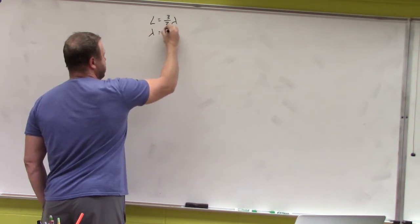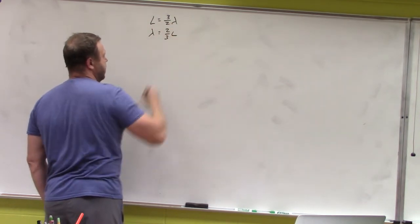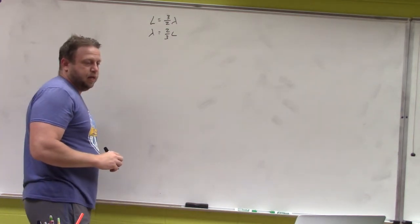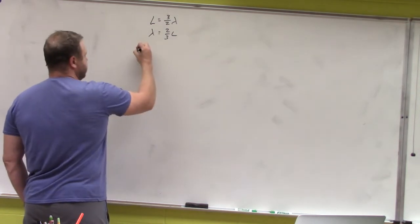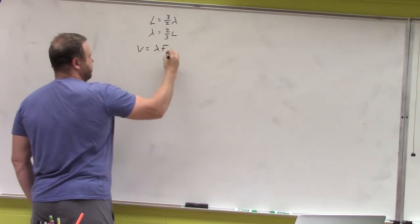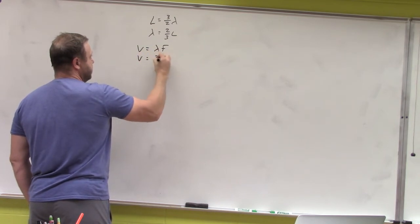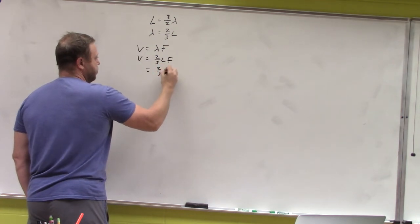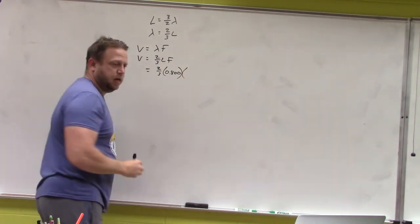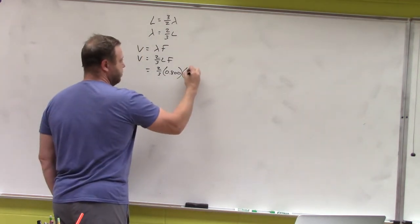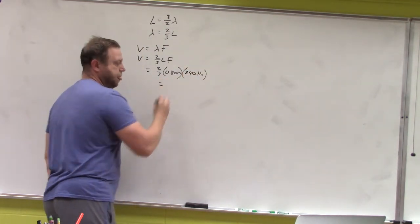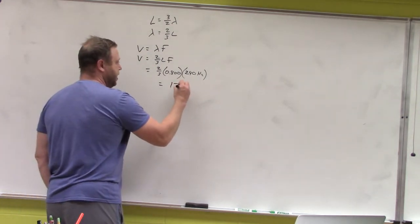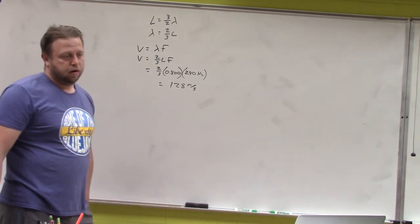Lambda equals two-thirds L. Since we have the frequency and the length of the string, we find the wave speed: v equals wavelength times frequency, substituting to get v equals two-thirds L times f. That's two-thirds times 0.8 meters times 240 Hz, giving a wave speed of 128 meters per second.